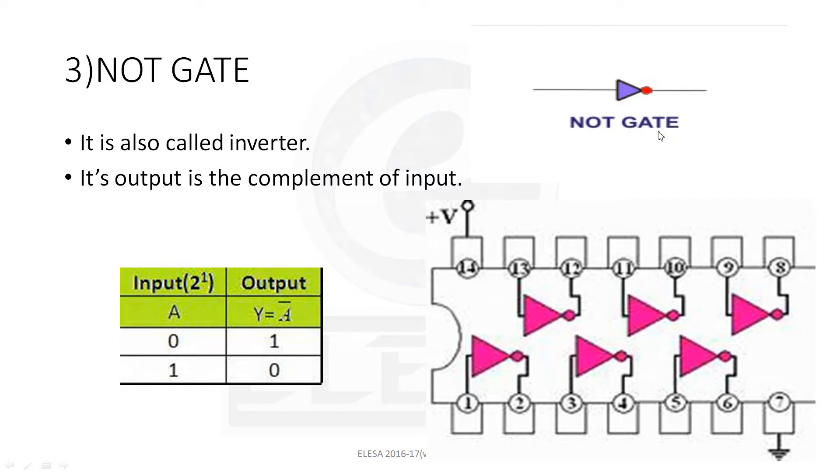The IC number for NOT gate is 7404. It contains 6 inverters, as shown in this diagram. This is all about the basic gates.